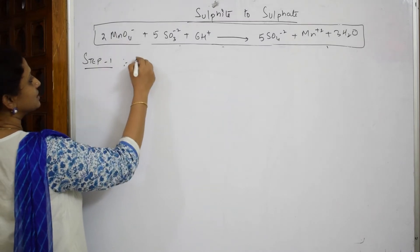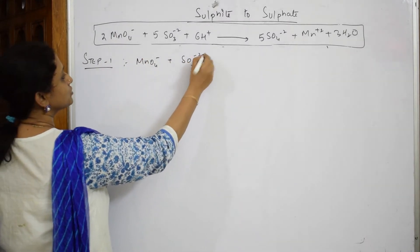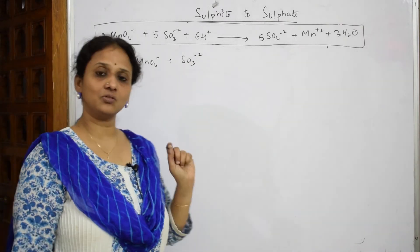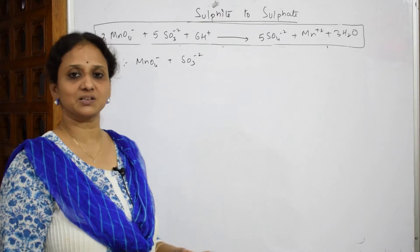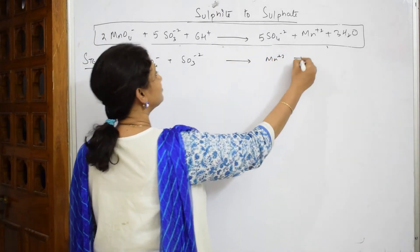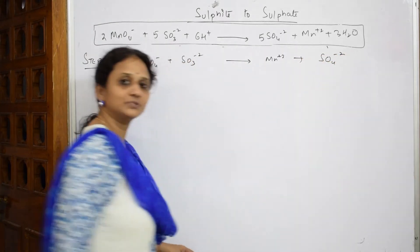In your paper let us write the equation given. MnO4^- and SO3^2-. I already said manganate always gets reduced to Mn^2+. The same thing everywhere, Mn^2+, and sulfite gets oxidized to SO4^2-.